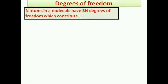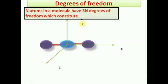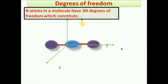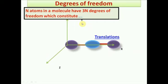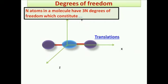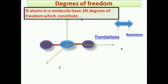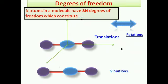If any molecule has n number of atoms, then it has 3n degrees of freedom. This constitutes three types: translational, rotational, and vibrational.